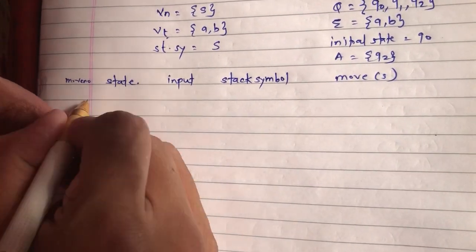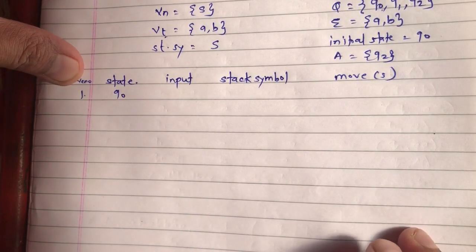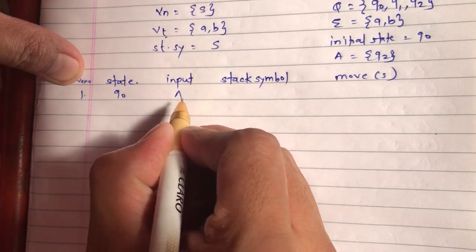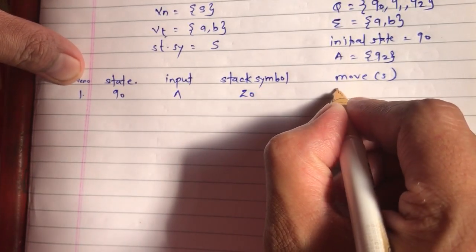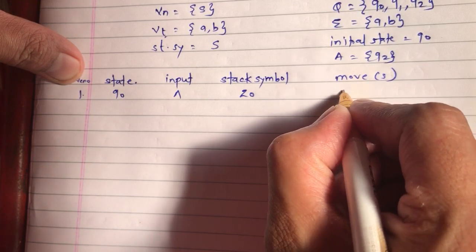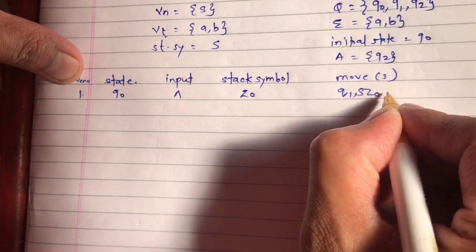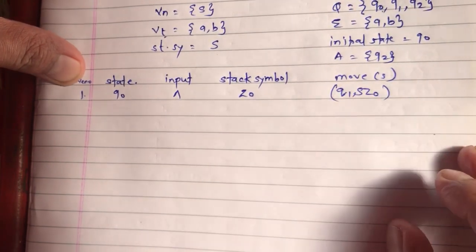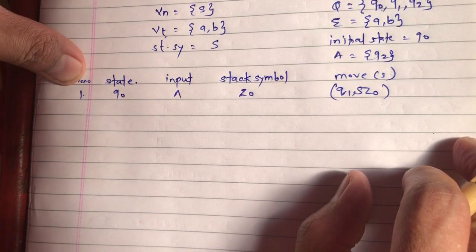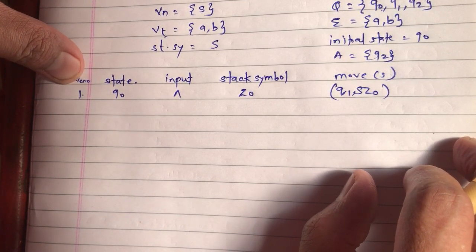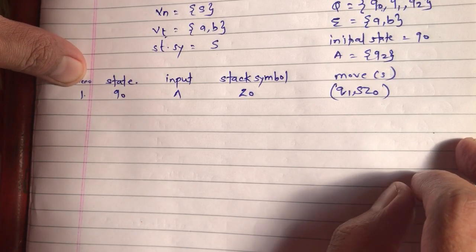There are three states. The first move: we will be in Q0 state and process null with Z0 as top of stack. We go to Q1, push S on top of stack, giving Q1 with SZ0. So delta(Q0, null, Z0) = (Q1, SZ0). This was our first rule in the definition from the last video.